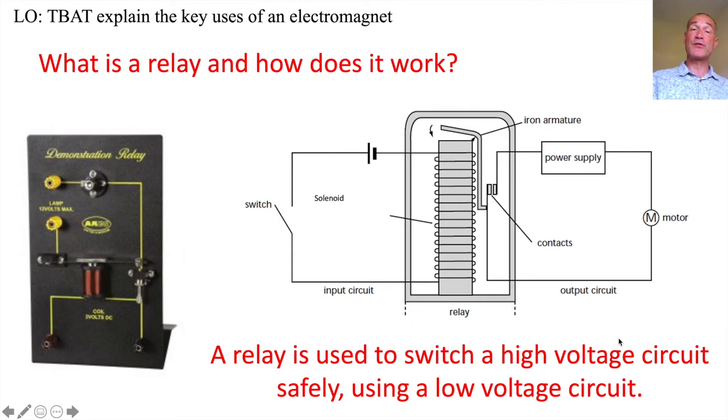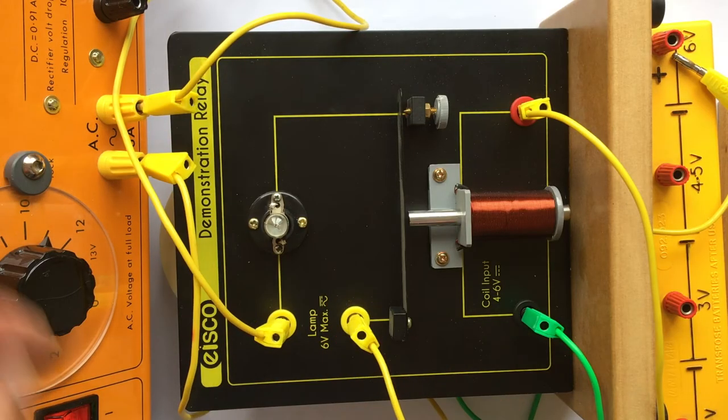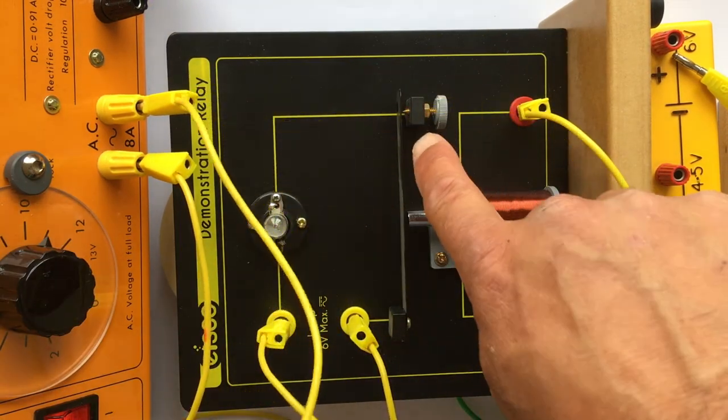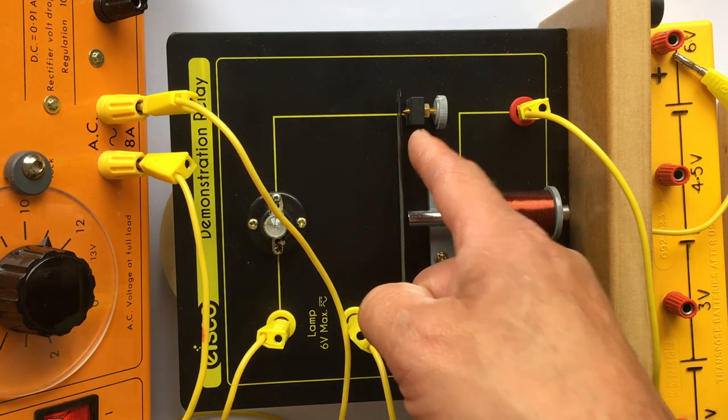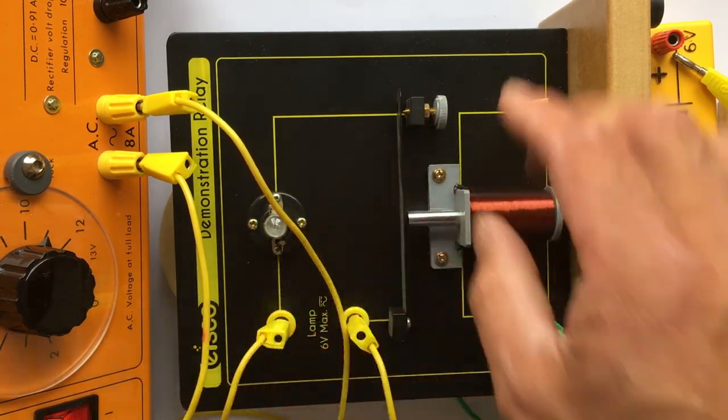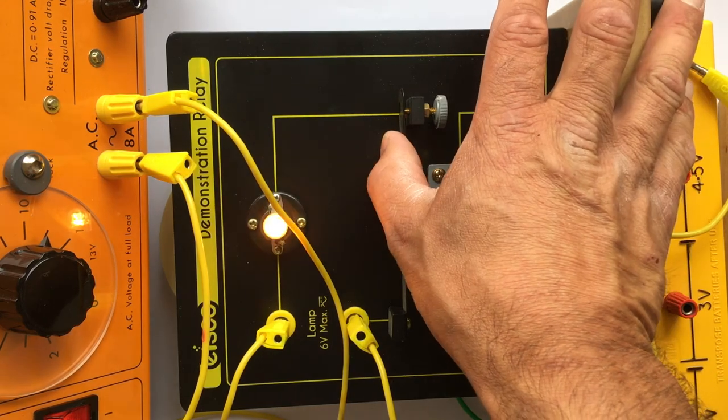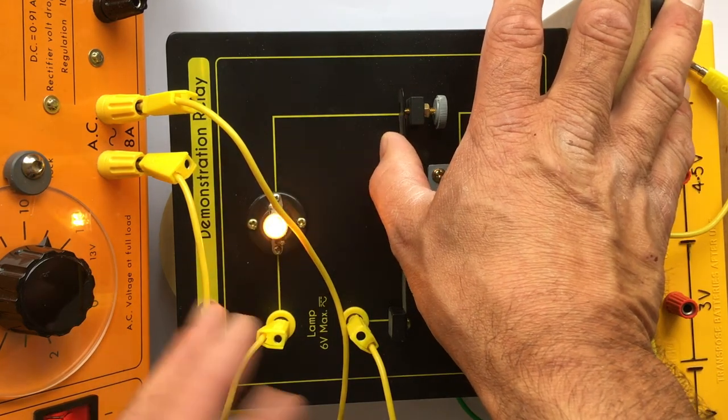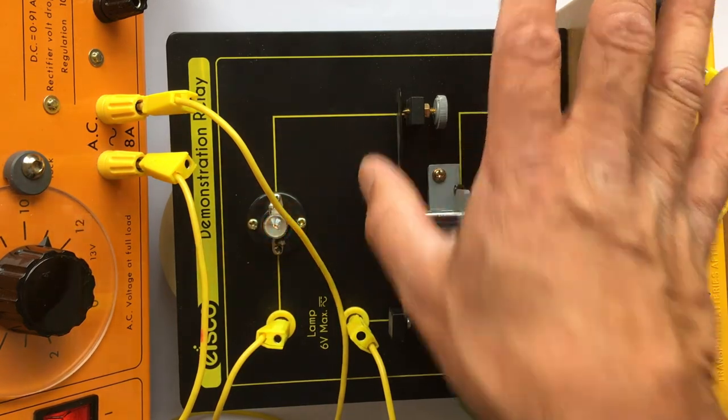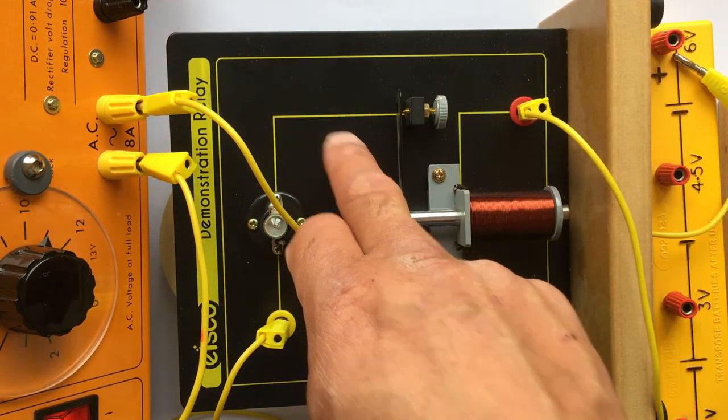So watch this quick video of an actual relay working. So I've got two different circuits. I've got this circuit which is the high voltage and you can see here I've got a switch, because at the moment the contact, this high voltage is not working. If I now close that switch manually you can see this high voltage of 11 volts lights the bulb. What I want to do is I want to actually control this circuit not with my fingers but using a completely separate circuit here.